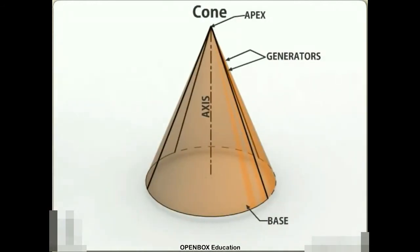Cone. A right circular cone is a solid generated by the revolution of a right-angled triangle about one of its perpendicular sides which is fixed. It has one circular base. Its axis joins the apex with the center of the base to which it is perpendicular.